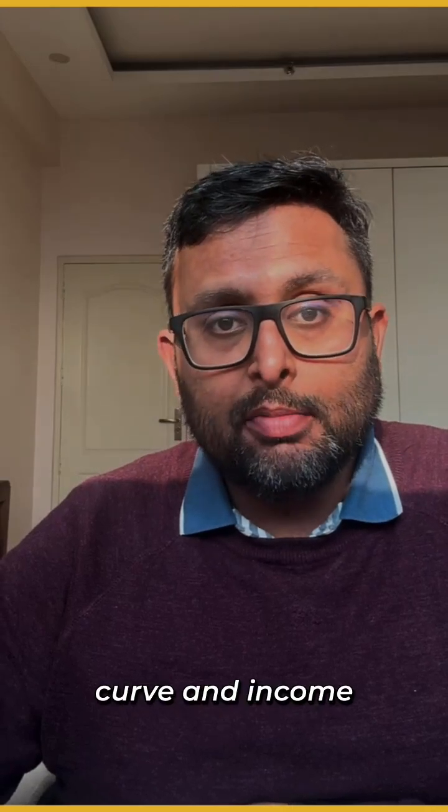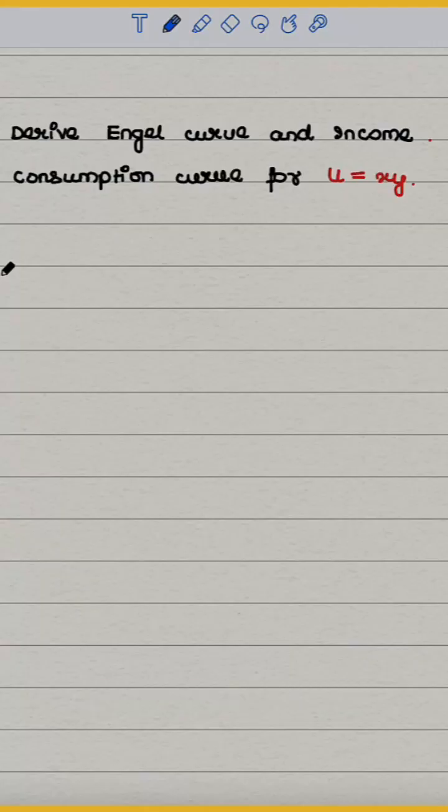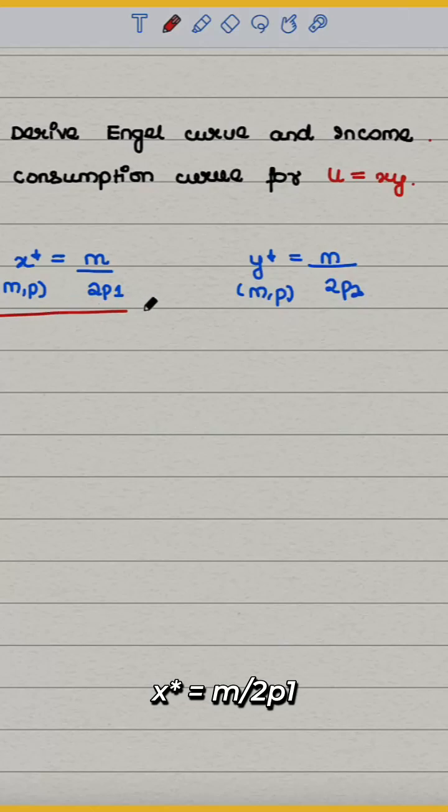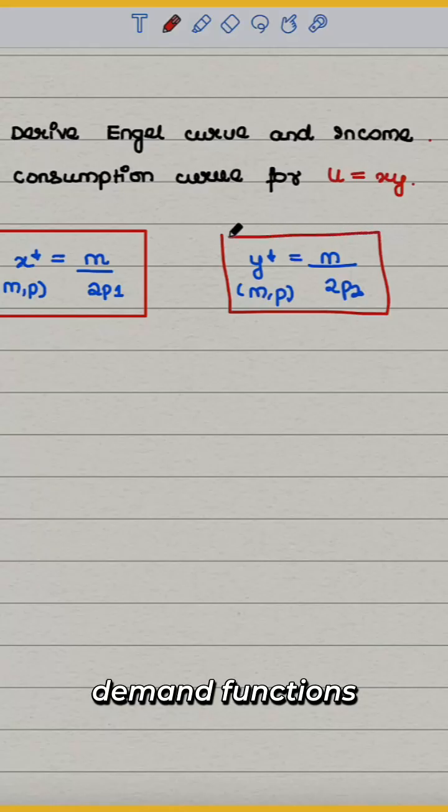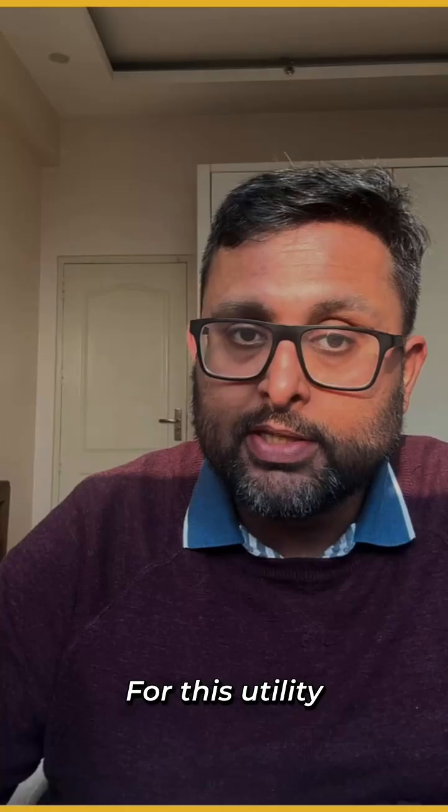Derive the Engel curve and income consumption curve for u equals x^y. x star equals m by 2p1 and y star equals m by 2p2 are the Marshallian demand functions for x and y for this utility function.